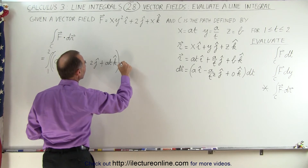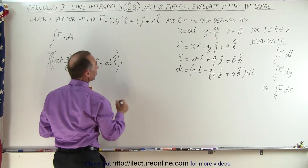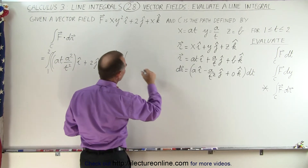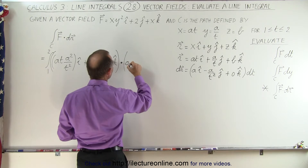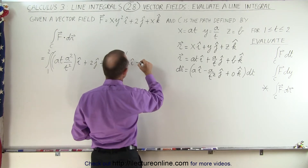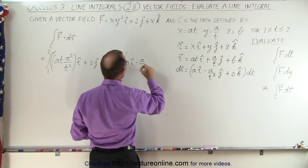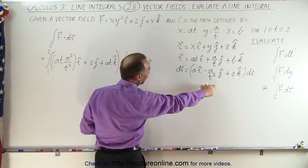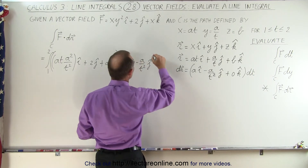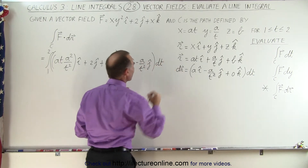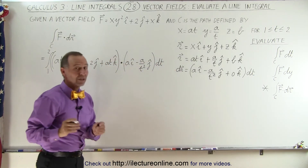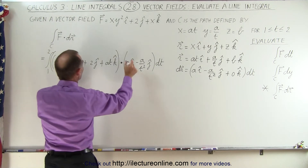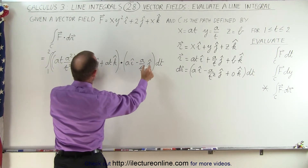We then take the dot product with dr. Here dr is defined as a in the i direction, minus a over t squared in the j direction, and 0 in the k direction, all times dt. So now we have a dot product, and we're going to multiply the i, j, and k components together.